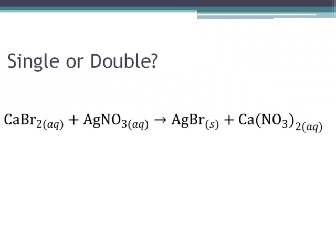Let's look at this reaction to determine if it's a single or double displacement. I see a compound and a compound making another compound and another compound, and the metals switch partners. The calcium was with the bromine and now it's with the nitrate, and the silver is with the bromine where it was with the nitrate to begin with. This is a double displacement reaction.